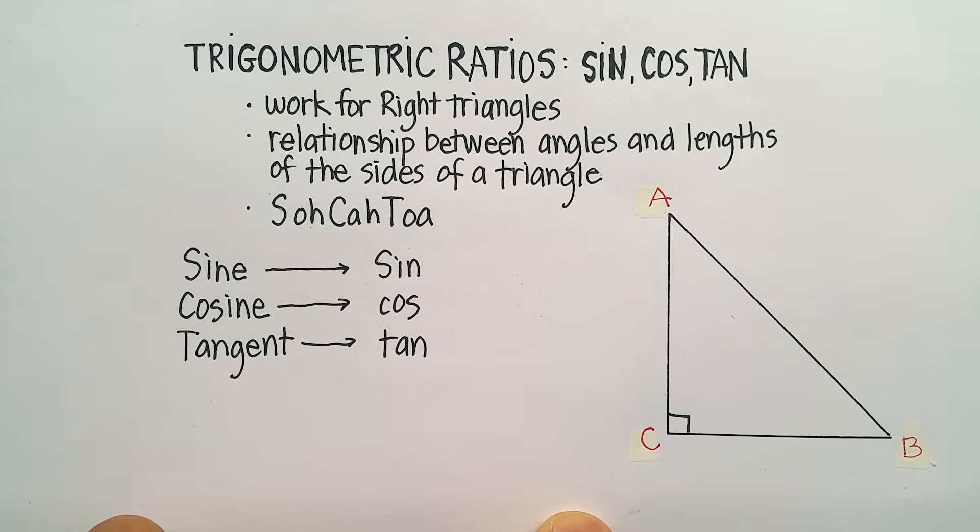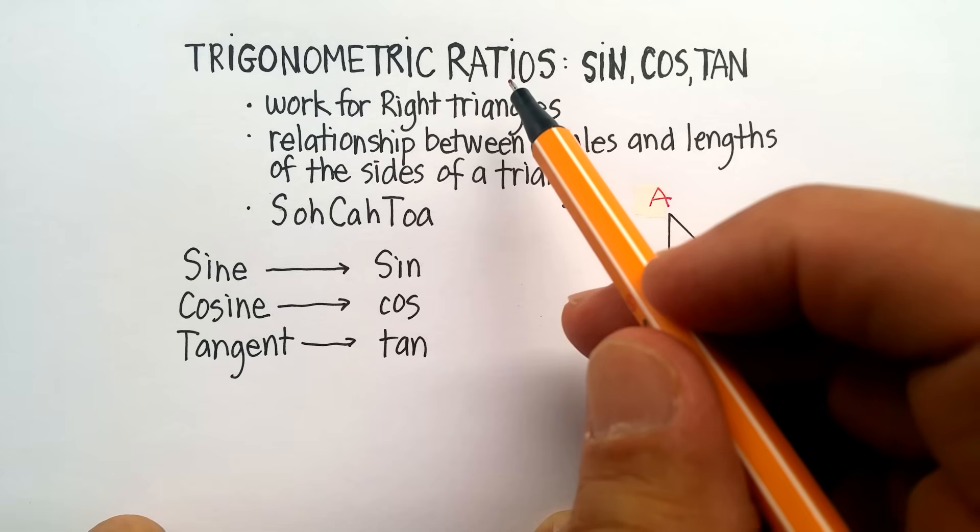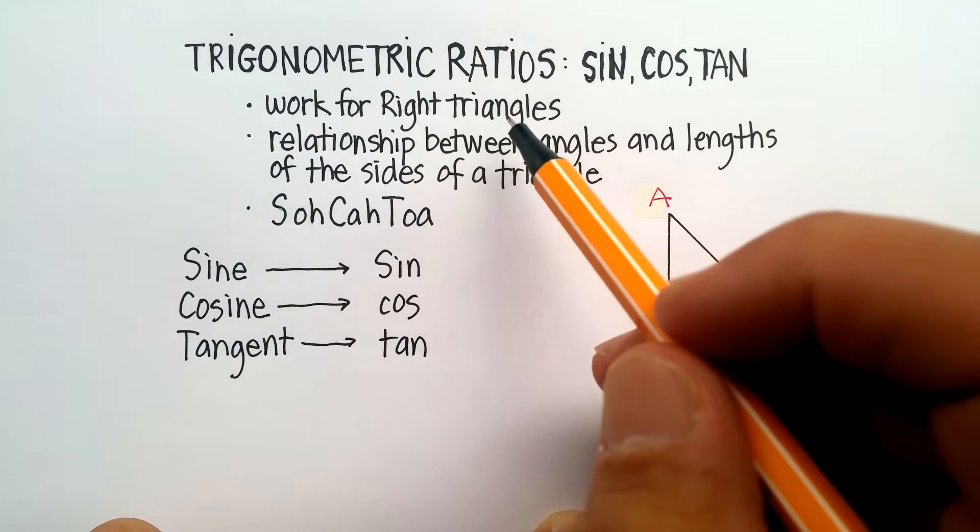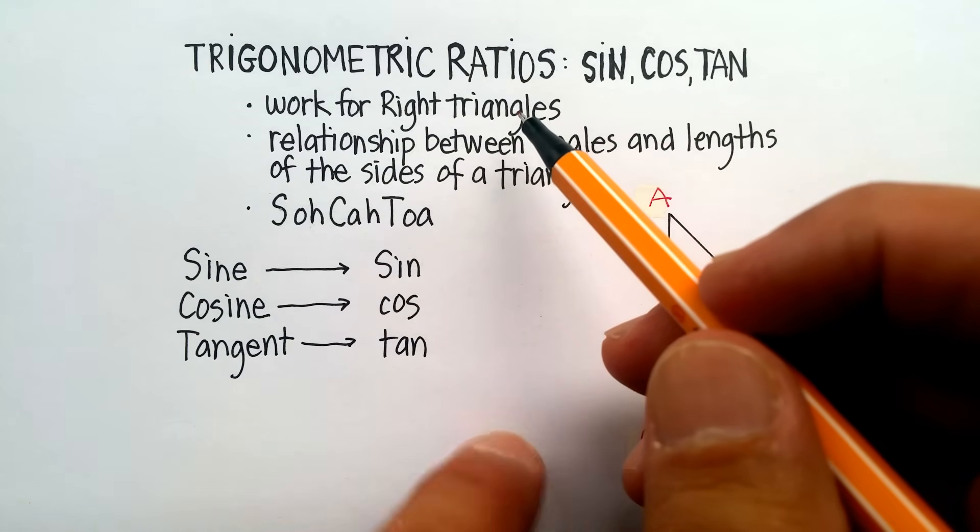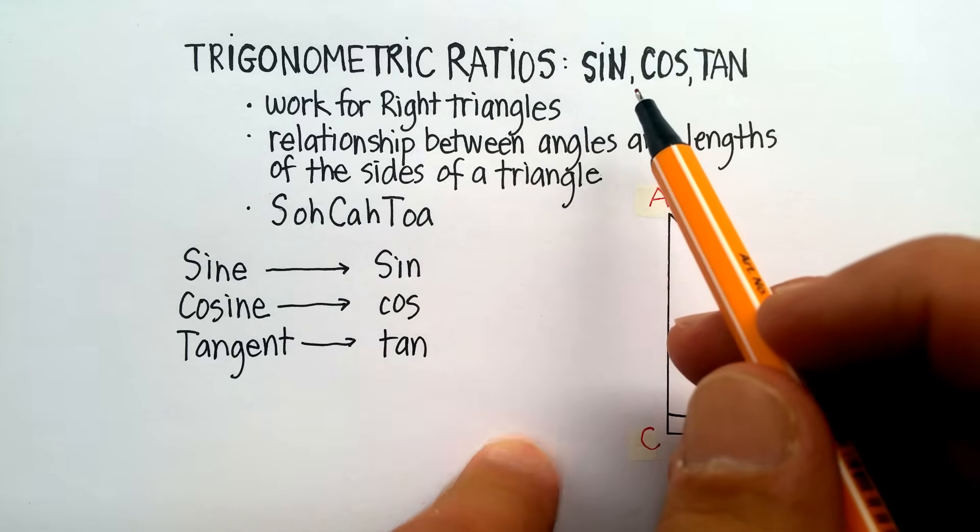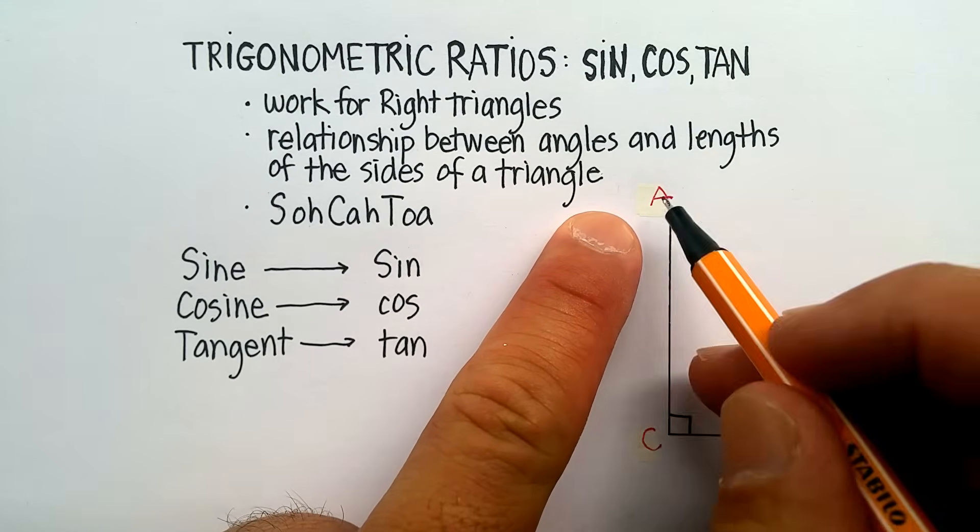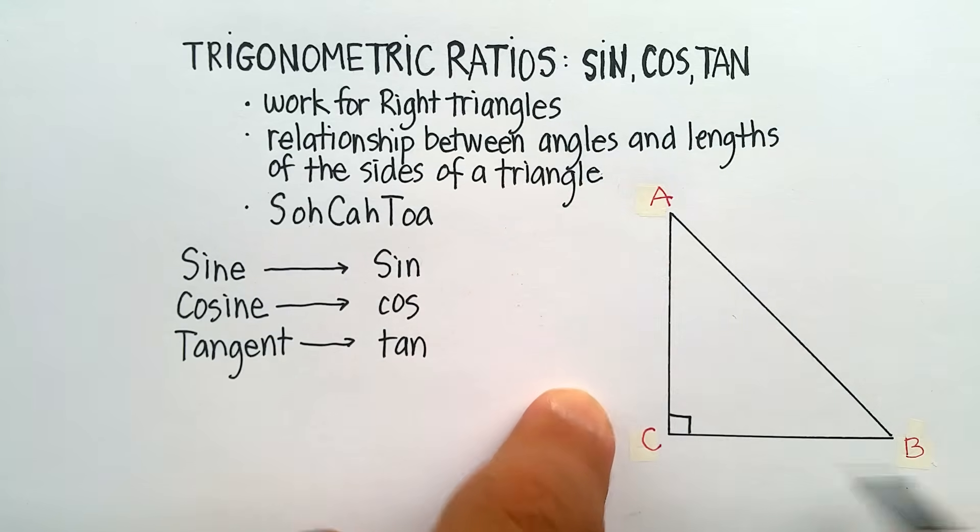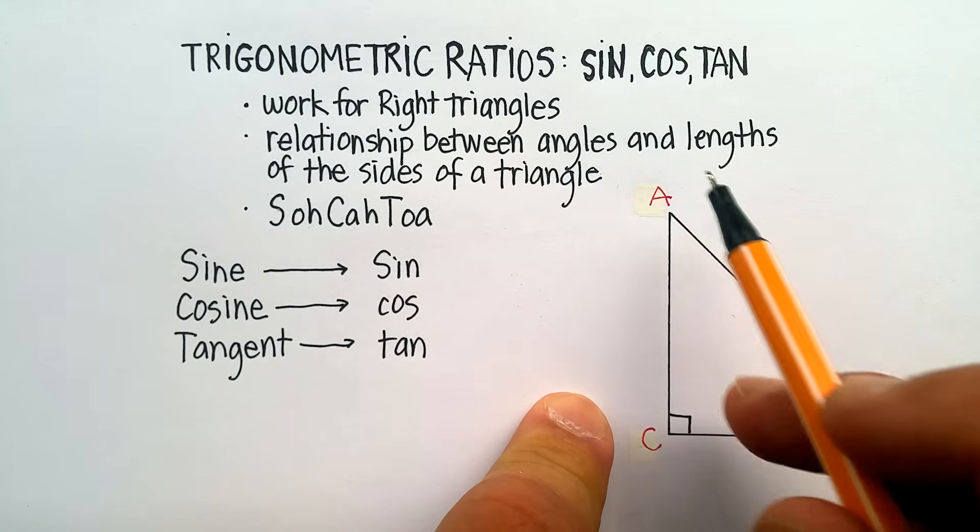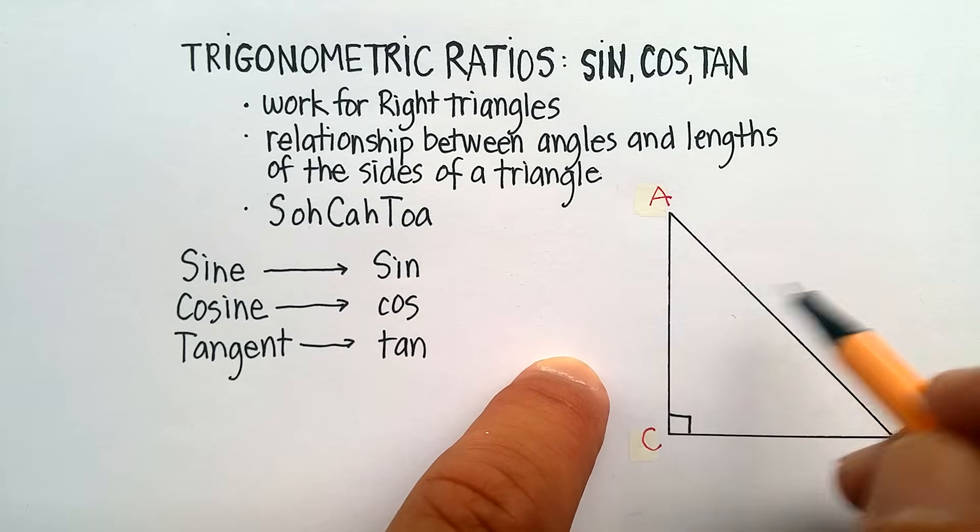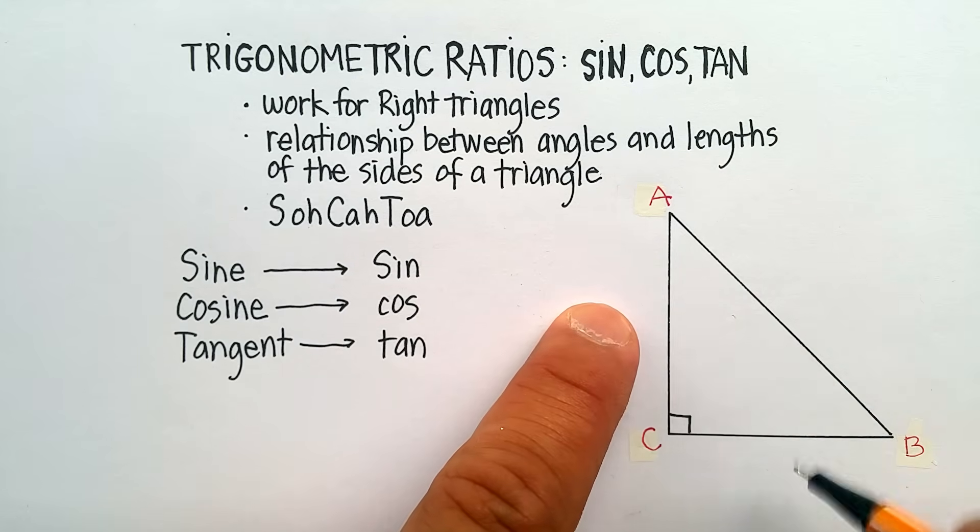OK, in this video, I'm going to go over something called the trigonometric ratios for right triangles. Now, trigonometric ratios really are just the relationship that exists between the angles of a triangle, and specifically a right triangle, and then the lengths of the sides of the triangles.